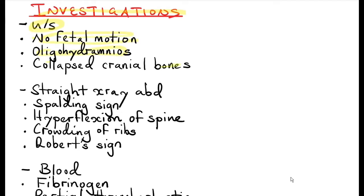On ultrasound you will see oligohydramnios and collapsed cranial bones — the collapsed cranial bones occur because of liquefaction of brain matter. You can send the patient for a plain abdominal X-ray, though this is rarely done today. You will see Spalding's sign, where there is irregular overlapping of the cranial bones due to liquefaction of brain matter, usually appearing seven days after death. On ultrasound you can also see hyperflexion of the spine and crowding of the ribs.